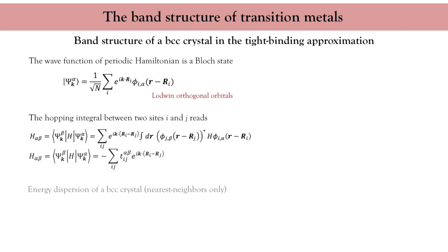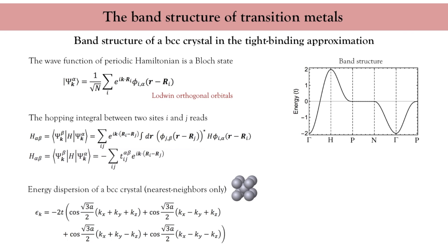For instance, if I consider only nearest neighbor hopping in a BCC structure, I obtain the energy dispersion given here. The band dispersion is traditionally represented on high symmetry points of the Brillouin zone, and for a BCC structure, I obtain something like that. I can also compute the density of states of my BCC metal and obtain a sharp peak around the center of the band, which corresponds to half-filling.